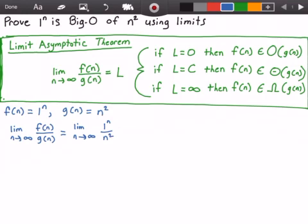Okay, now this may look a little tricky, but it's not too bad here. All you have to do is remember that 1 to the power of anything is still 1. So what we get is the limit as n approaches infinity of 1 over n squared. And this, of course, gives us our limit L, which is equal to 0.